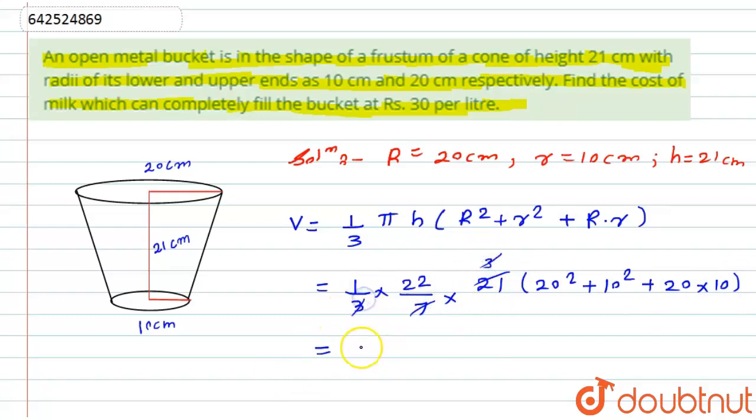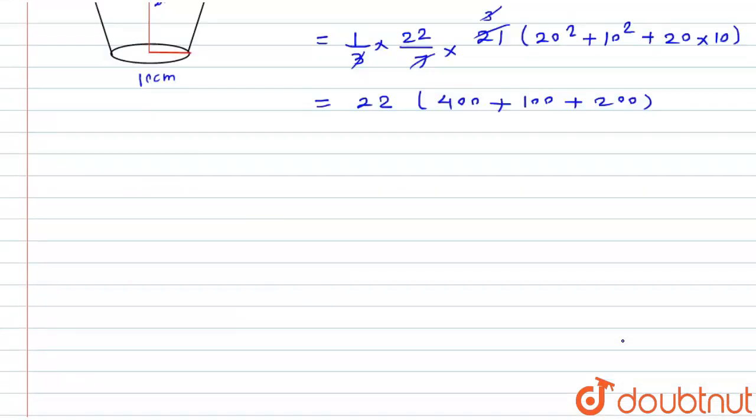And this three will be cancelled here. We get 22 and this will be 400 plus 10 square 100 plus 20 into 10 will be 200. Now for the solving I will get here 22 into 700 which will be nothing but is equals to 15400 centimeter cube.